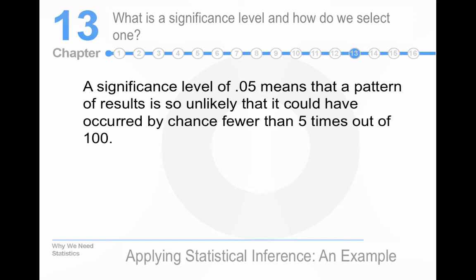So, what does that mean? Well, 0.05 means that it would happen five times out of 100. It's so unlikely. So, one time in 20.